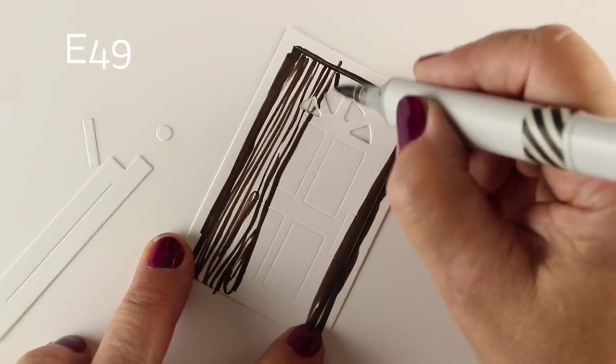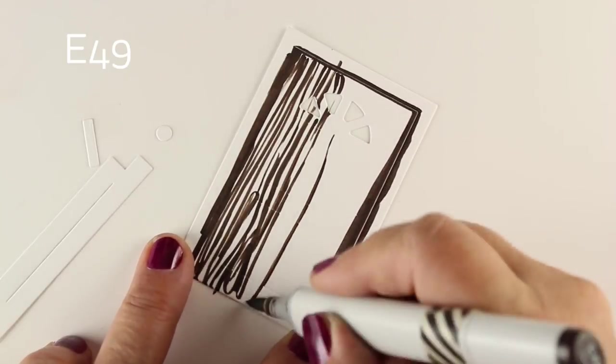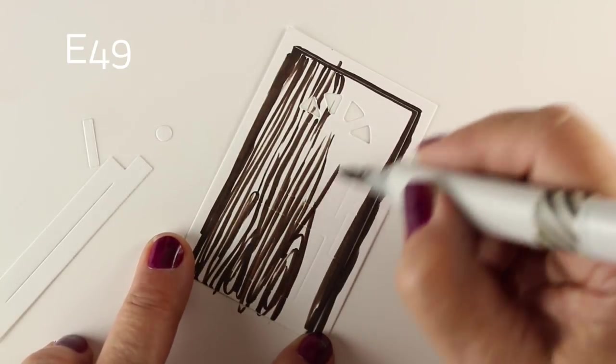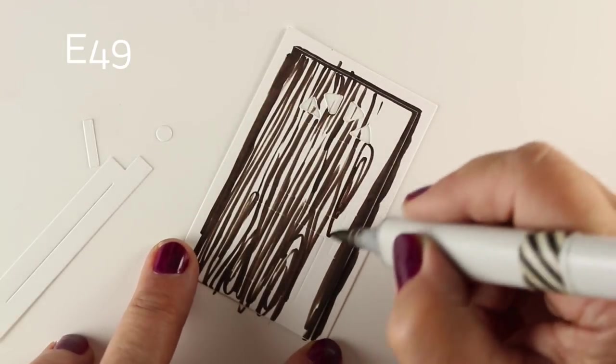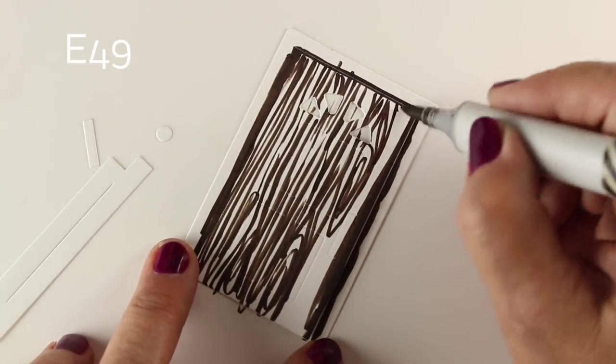When you die cut it, it's gonna make the door as this rectangle but it's gonna leave an empty door in the piece of paper that you die cut it in. So if you cut it in the center, then you can use that panel the way I'm going to.